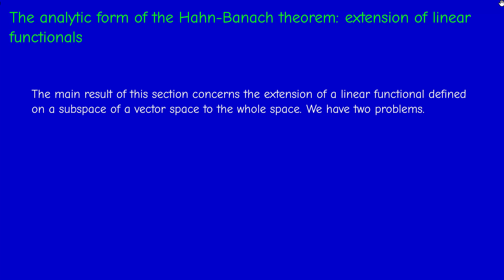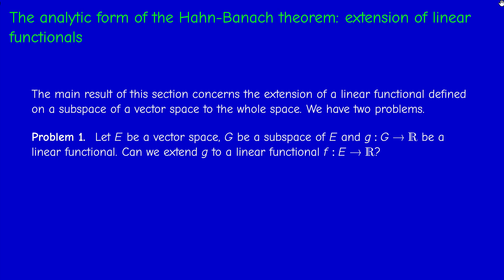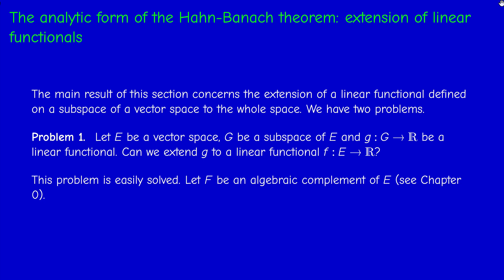The problem is to extend a linear function defined on a subspace of a vector space to the whole space. Problem one: we have a vector space E, a subspace G of E, and a linear functional from G to R. We ask if we can extend it to a linear functional on the whole space. This problem is easily solved — it's enough to take an algebraic complement F of G in E. As we know from chapter 0, any subspace has an algebraic complement, so any element of E can be written as the sum of an element in G and one in F, in a unique way.